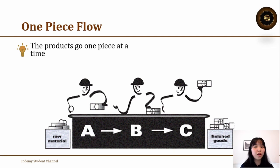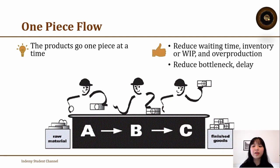There will be no work in progress products in the system. We can take a look here, the gain for this one piece flow is reducing the waiting time, inventory or work in progress, and overproduction. We can also reduce the bottlenecks and the delays in our system. This can be applied not only in the production line or assembly line, but it can also apply in your organizational processes.